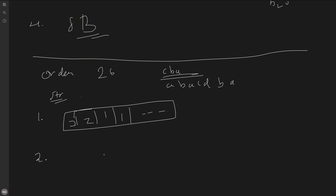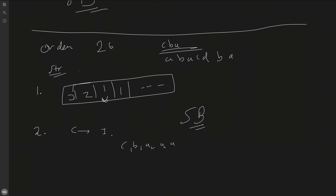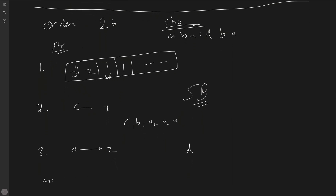Step 2: iterate the characters in the order string. For each character, look up its frequency in the frequency array and append it that many times to a StringBuilder. So we append C once, then V twice, then A three times. Step 3: iterate through all characters from 'a' to 'z' and append any remaining characters that were not in the order string — such as D in this example. Step 4: return the result.